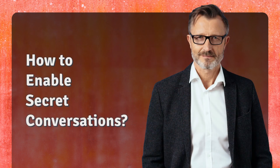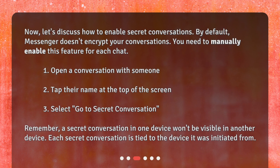How to enable secret conversations? By default, Messenger doesn't encrypt your conversations. You need to manually enable this feature for each chat. 1. Open a conversation with someone. 2. Tap their name at the top of the screen. 3. Select 'Go to Secret Conversation.' Remember, a secret conversation on one device won't be visible on another device. Each secret conversation is tied to the device it was initiated from.